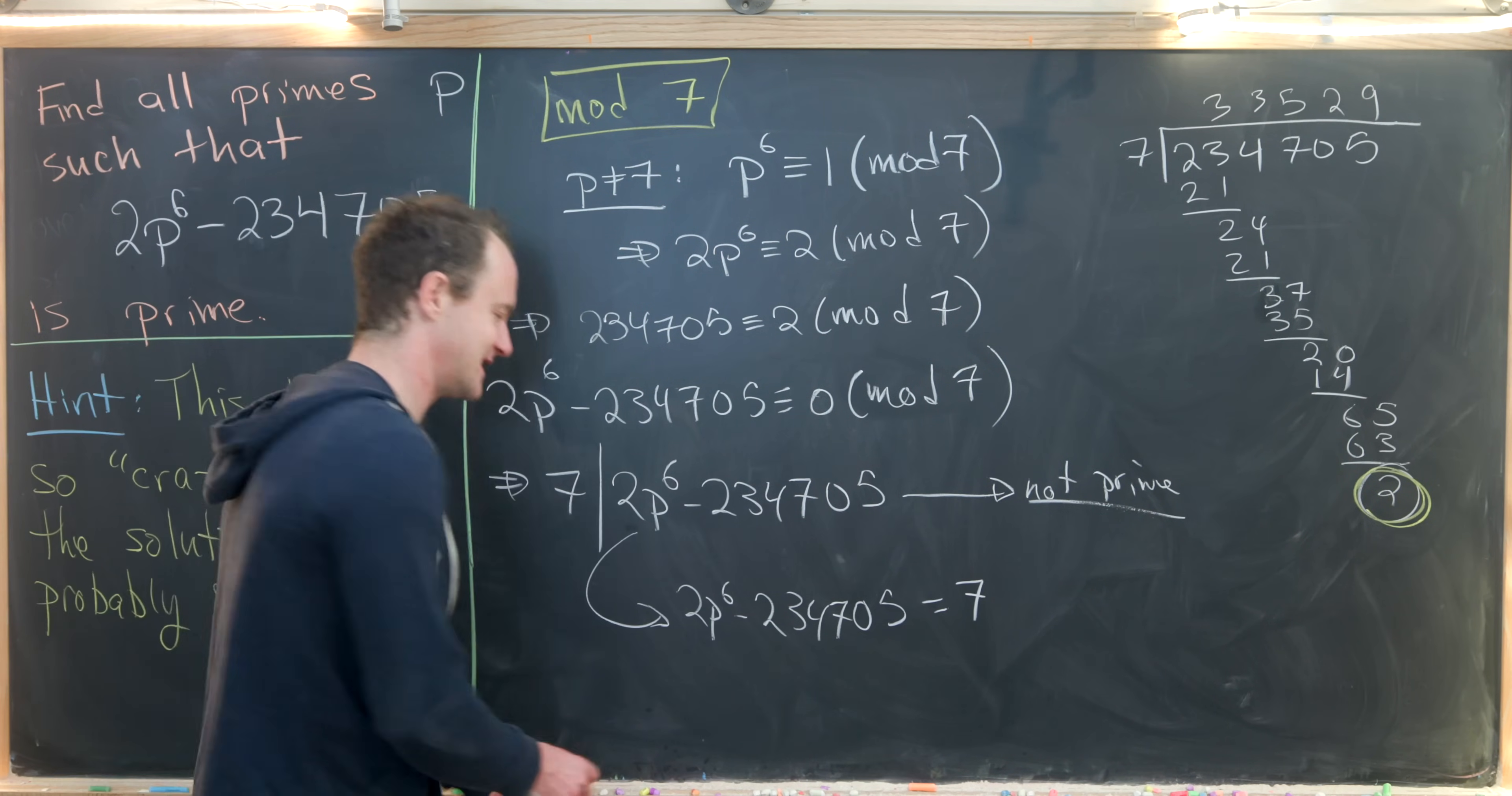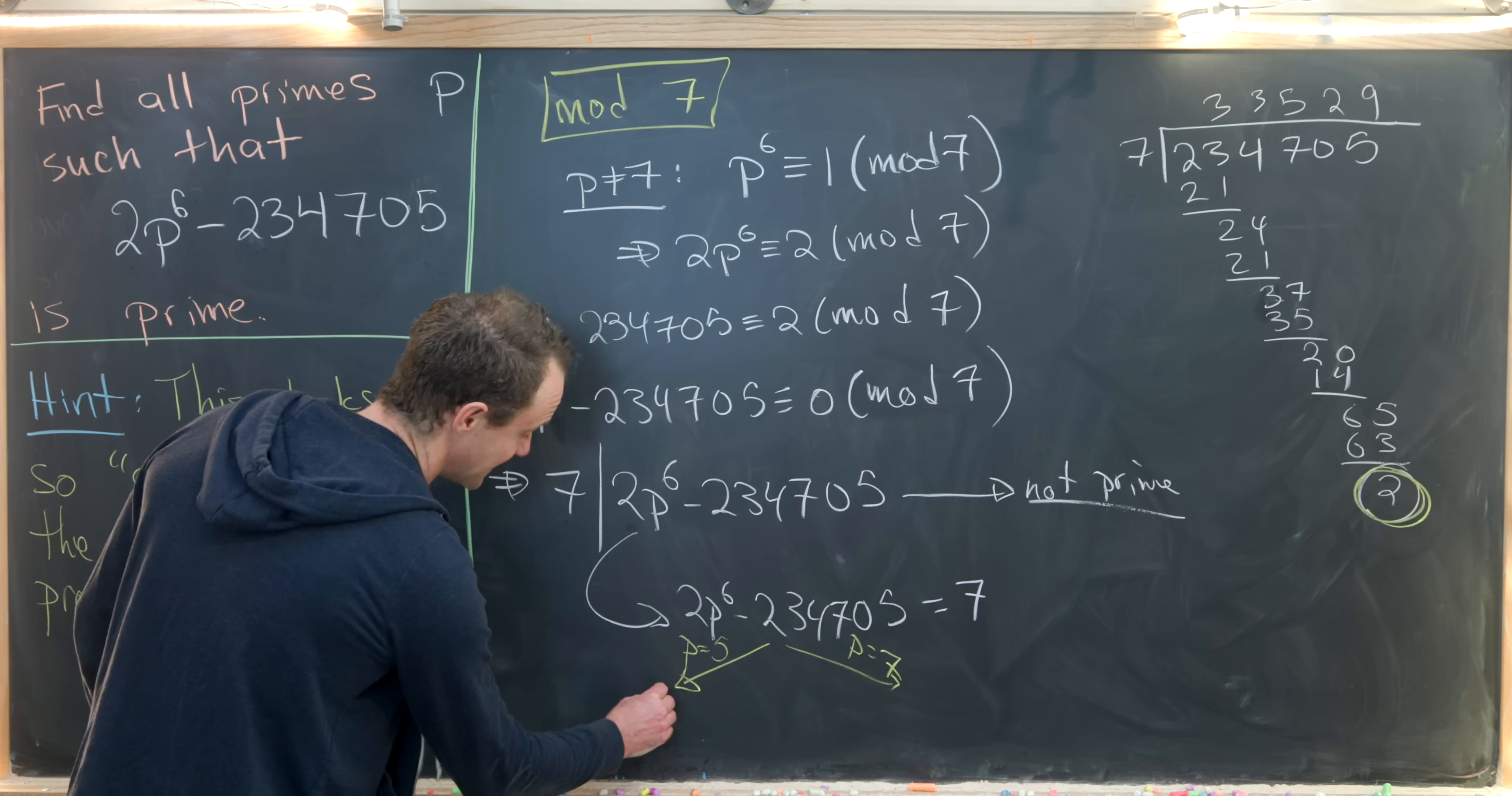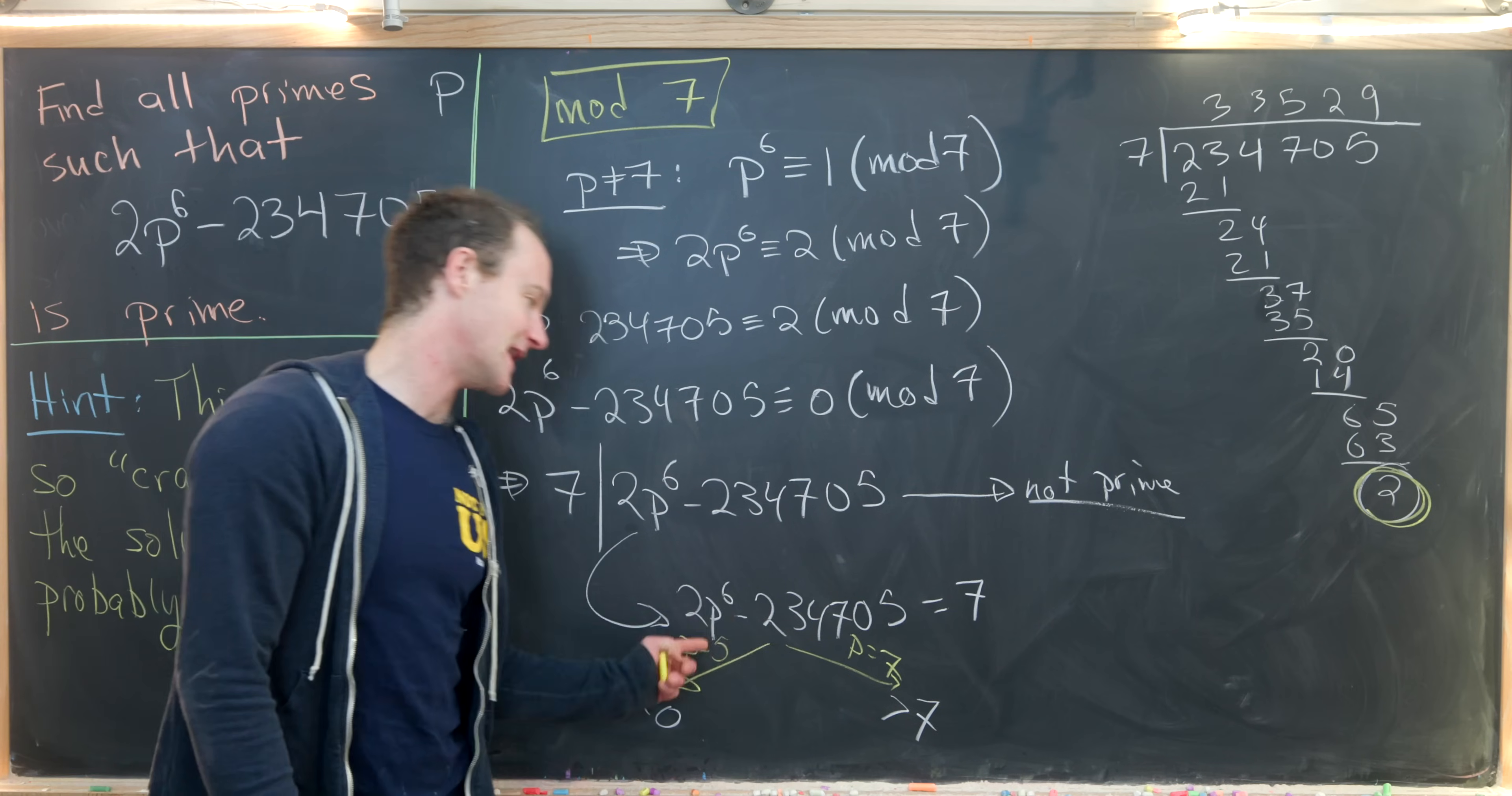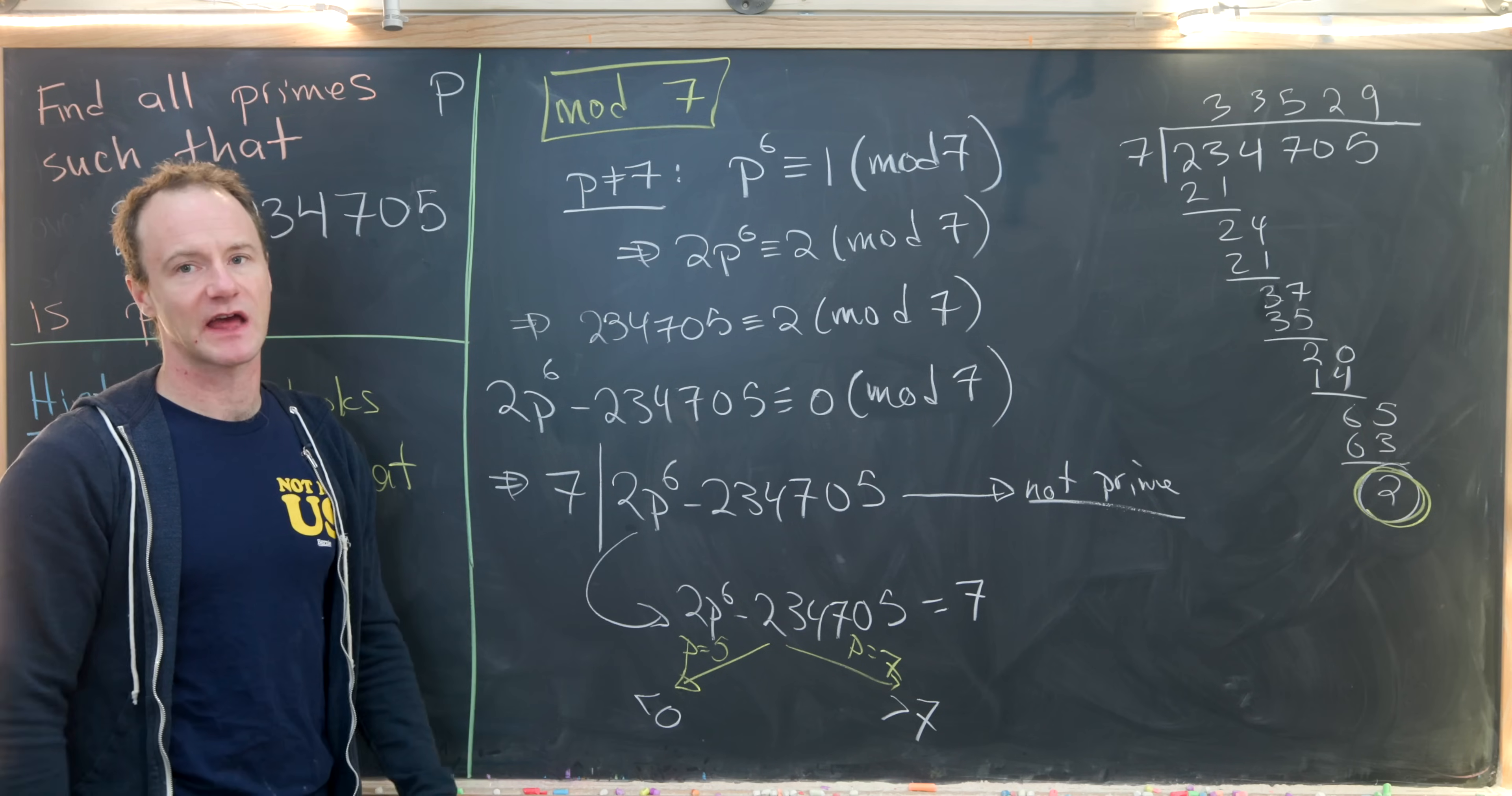And the best way to check that is just with test cases. So if we split this off into the p equals 5 case and then the p equals 7 case, we'll see in the p equals 5 case, this thing is less than 0. And in the p equals 7 case, this is much bigger than 7. So that means that this is never equal to 7, which means this kind of object is not prime unless possibly if p is equal to 7. In that case, we'll have to look at it on its own.